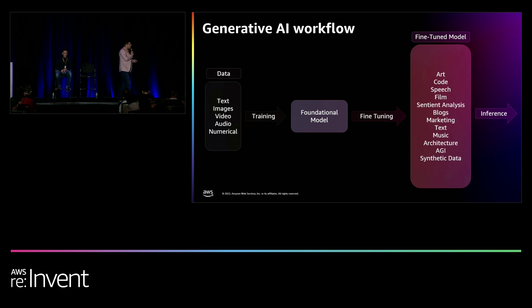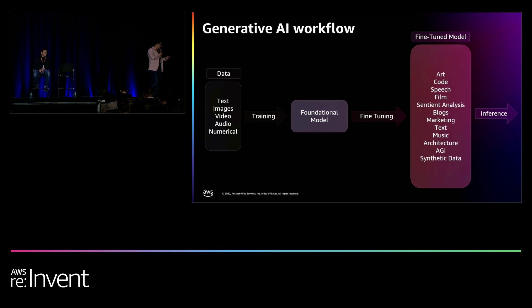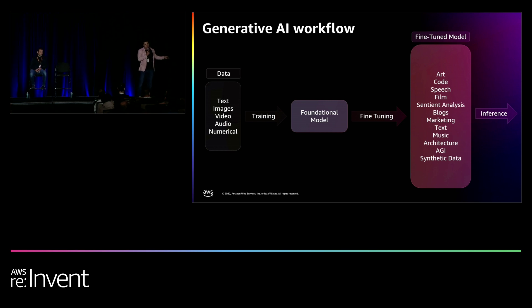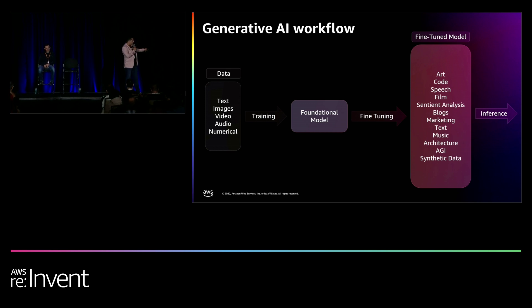An interesting observation: an okay foundational model with fine-tuning for a specific use case can outperform a really strong foundational model without fine-tuning. That means a lot of open-source foundational models that will be released are going to have many useful applications. Talking to the VC community, they expect roughly 20 companies to build foundational models, but thousands of companies taking advantage of fine-tuning. And finally, inference is going to be enormous — a few foundational model builders, a lot of fine-tuners, and an enormous amount of inference.